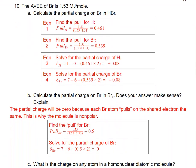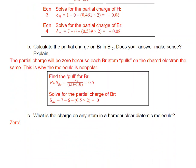Looking at the AVEE of bromine: we calculate the partial charge on Br in HBr, which gives a partial positive charge on H and a partial negative charge on bromine. But for Br₂, we get a partial charge of zero on bromine. This makes sense because each bromine atom pools on the shared electrons with the same strength, which is why the molecule is nonpolar. Any atom in a homonuclear diatomic molecule will have a charge of zero, and these molecules are nonpolar.